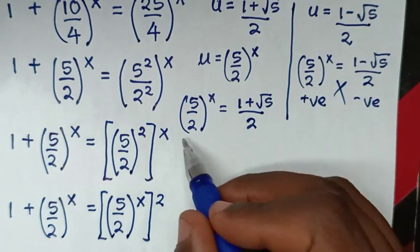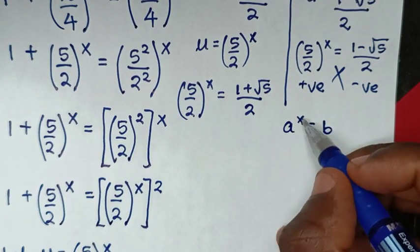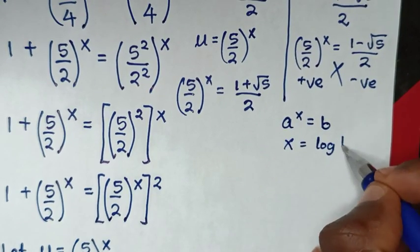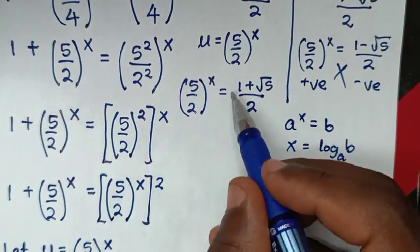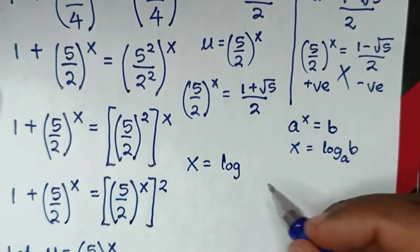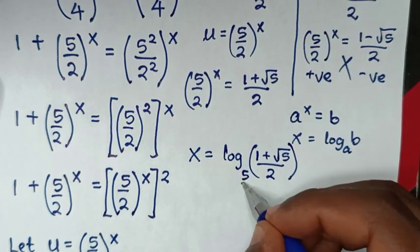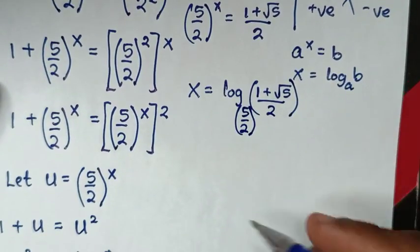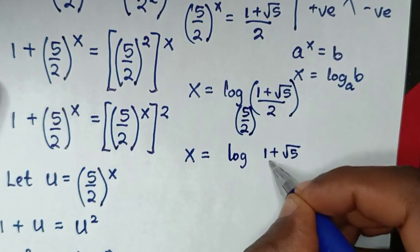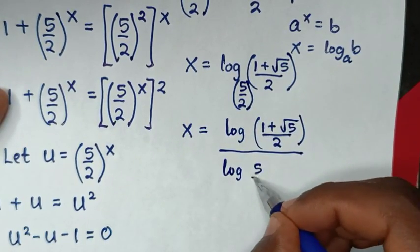We continue with the valid solution. We have (5/2)^x equals (1 + √5)/2. This is in exponential form a^x = b, so in logarithmic form x equals log base a of b, which gives x equals log of (1 + √5)/2, divided by log of (5/2).